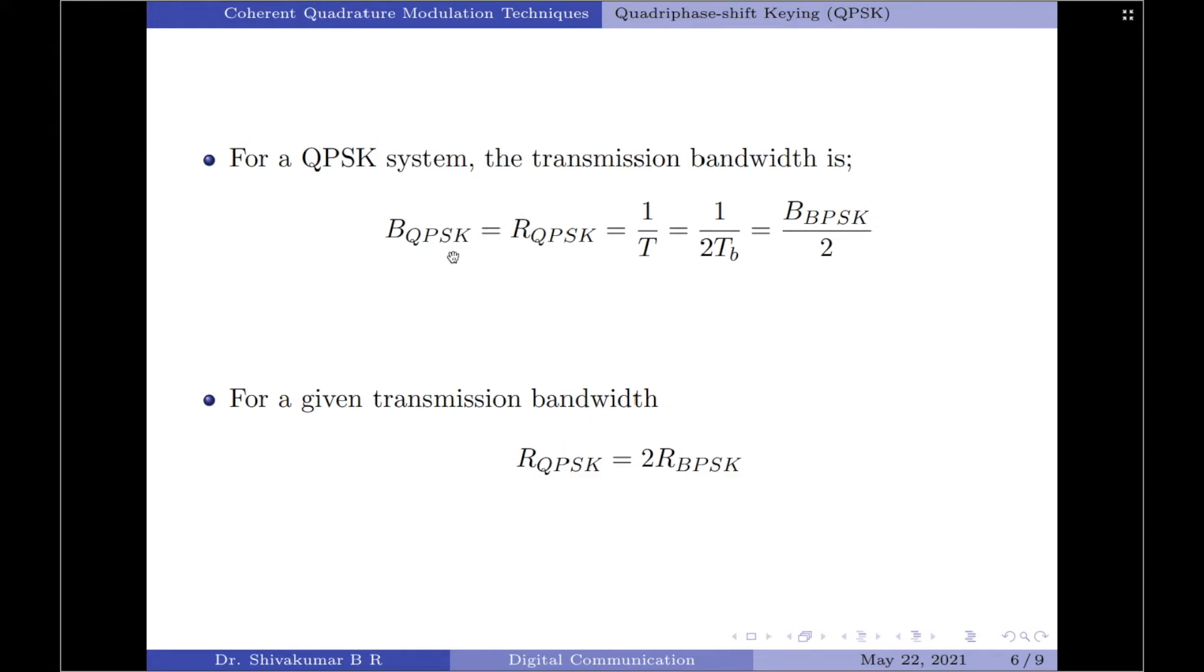Also, for the given transmission bandwidth BQPSK, the transmission rate RQPSK will be twice that of RBPSK. That is, the QPSK wave carries twice as many bits of information as the corresponding binary PSK wave.